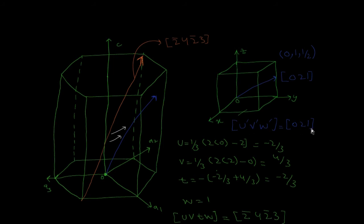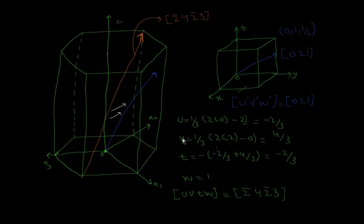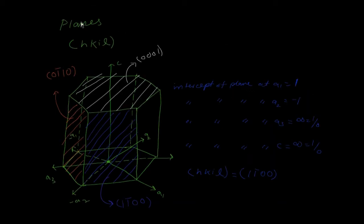With u' = 0, v' = 2, w' = 1: u = (1/3)(2×0 - 2) = -2/3, v = (1/3)(2×2 - 0) = 4/3, t = -(u + v) = -2/3, and w = w' = 1. Removing the fraction by multiplying all by 3, the four indices u v t w are 2̄ 4 2̄ 3.